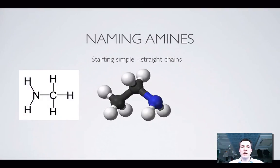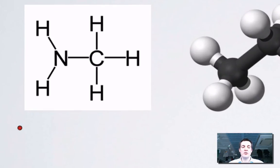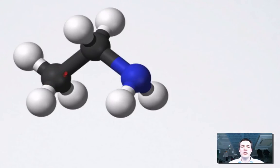Naming amines is quite simple and it's got some similarities to the things we've looked at before. Now, this amine here has one carbon in the chain so I start off by calling it methyl, and then I end it by calling it amine because it's got an amine at the end of it. So methylamine. This one here has two carbons so it would be ethyl amine.